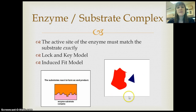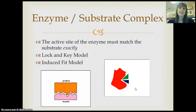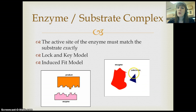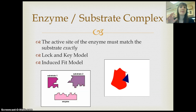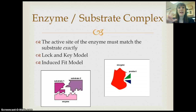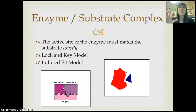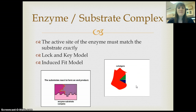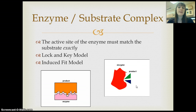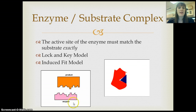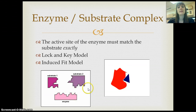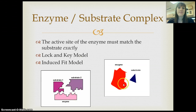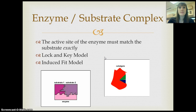The other model is called the induced fit. It also involves a really specific 3D structure. The difference is that when the substrate comes in, it actually changes the shape of the enzyme itself a little bit — some chemical reactions occur between the two, and the enzyme conforms a bit more to the substrate, allowing the products to be formed. Either way, notice the enzyme is unchanged from beginning to end, and notice the important specificity between the substrate and the enzyme.